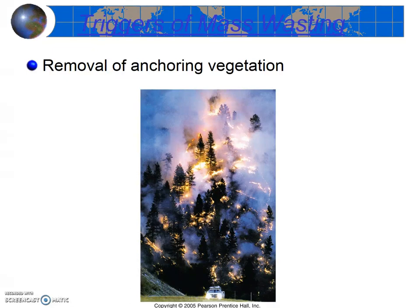So how is the vegetation removed? Fire, either natural or human-caused, can remove a lot of vegetation, and we've seen that a lot here locally. Logging and development are other ways that vegetation can be removed. Indeed, after major fire events, logging events, or developments, an area often experiences landslides and earth flows for several years.